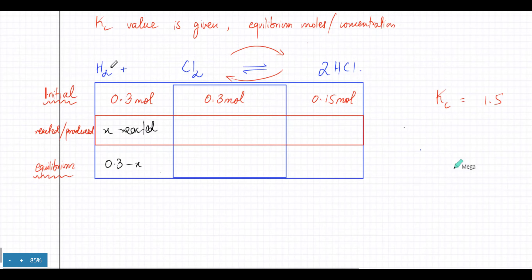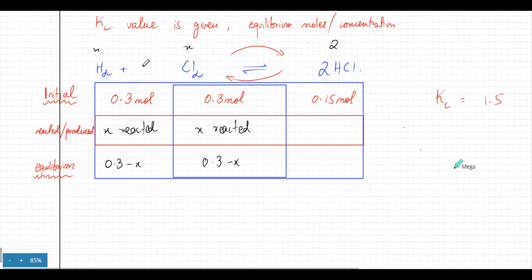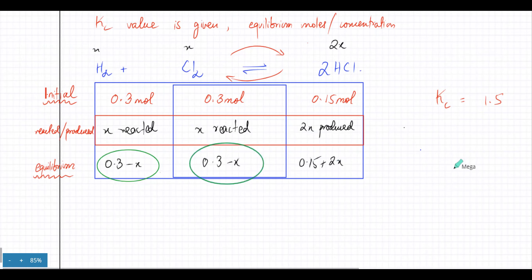If X moles are reacting for H2, the ratio is 1:1, so X moles of Cl2 would also react, giving equilibrium moles of 0.3 minus X for Cl2 as well. And if X moles of H2 react with X moles of Cl2, then on the product side 2X moles of HCl would be produced according to the ratio. So you had 0.15 initially and now 2X extra moles are produced, giving 0.15 plus 2X at equilibrium.